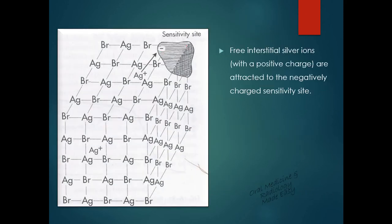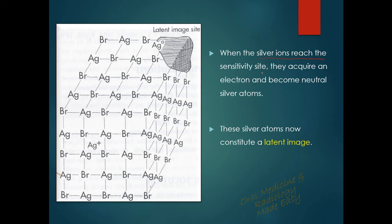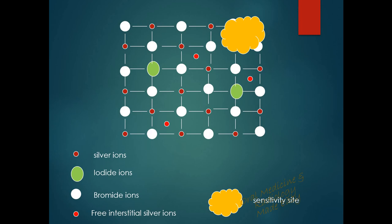The negatively charged sensitivity site attracts the free-lying, positively charged interstitial silver ions. When the silver ions reach the sensitivity site, they acquire an electron and become neutral silver atoms. So the positively charged silver ion acquires the negatively charged electron from the sensitivity site and is converted to a neutral silver atom. These neutral silver atoms now constitute the latent image.